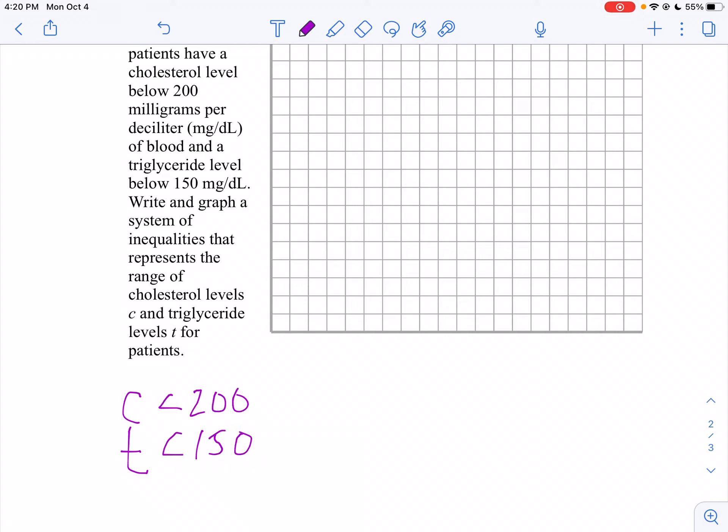Notice since I'm measuring things in my blood, it can't be negative. So without saying it, C has to be greater than or equal to zero and T has to be greater than or equal to zero. I'm only going to consider that when I graph it.